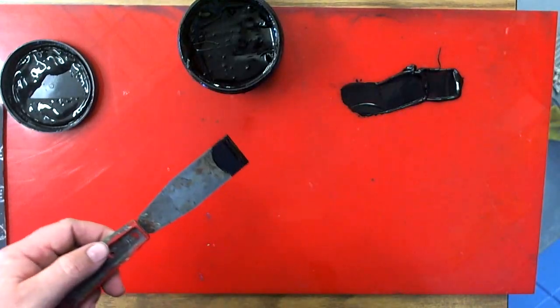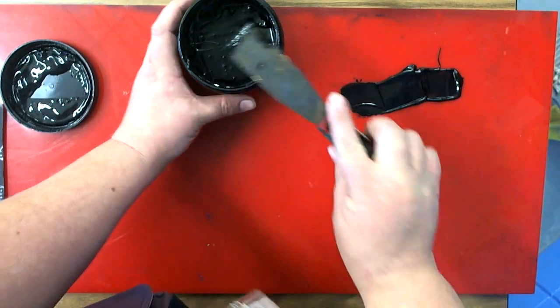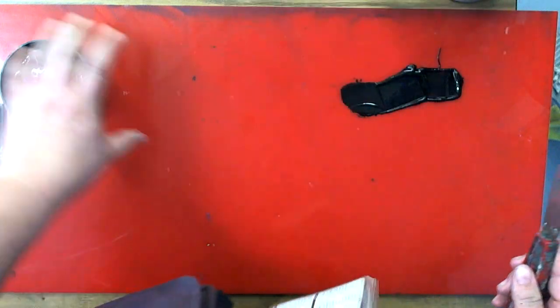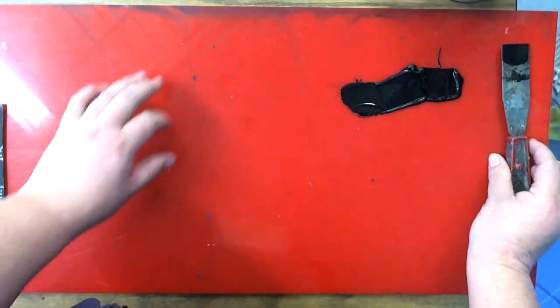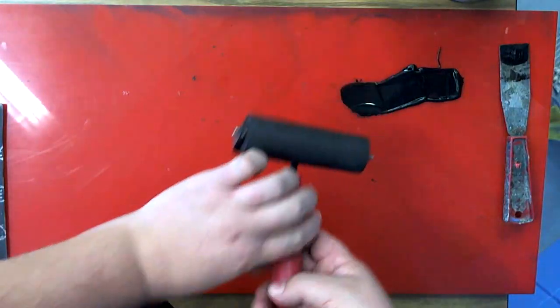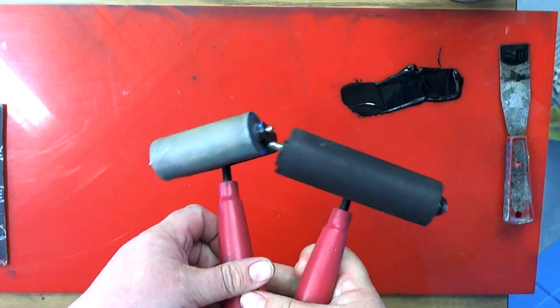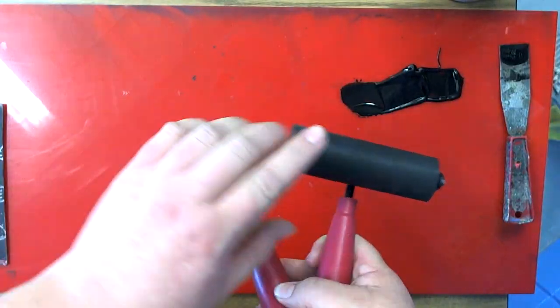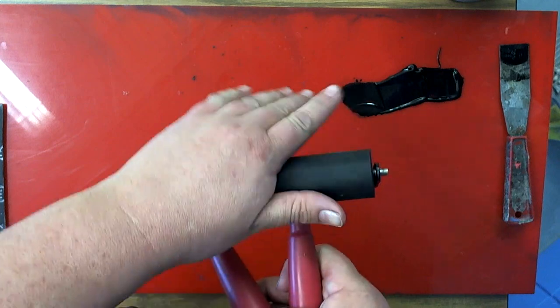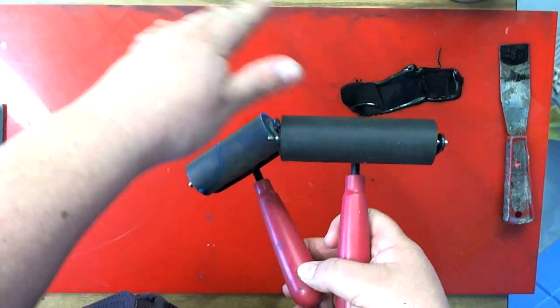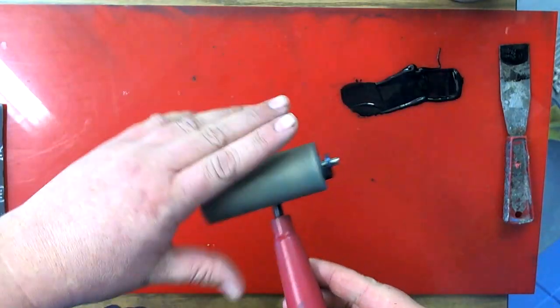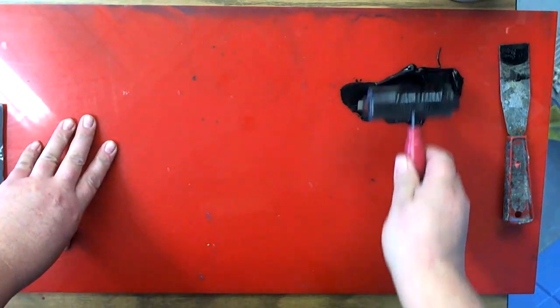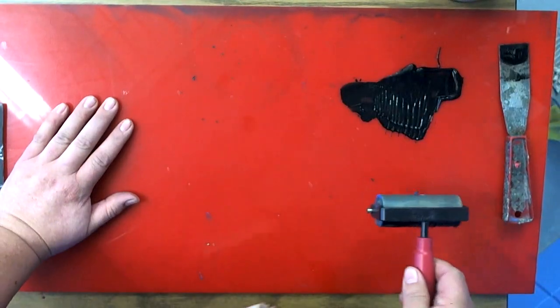Then using your brayer, I like to save, if you get two different size brayers, I like to save my big one for the printing and then the small one for the inking. If they're the same size it doesn't matter. So I'm just gonna pick up some of this ink.